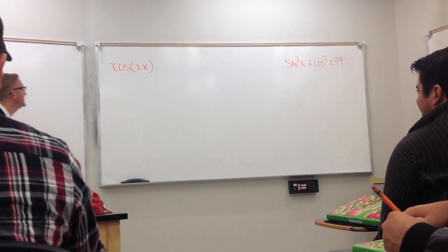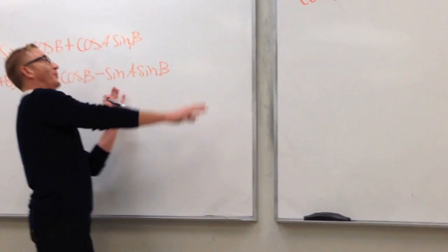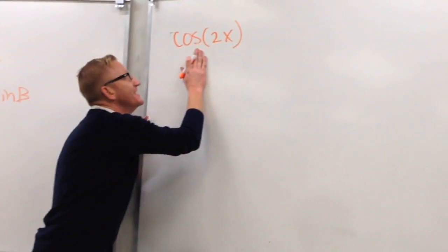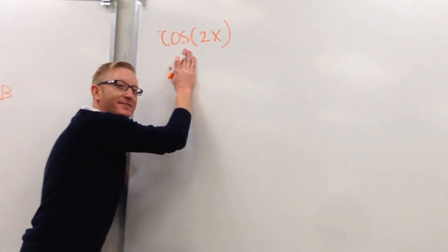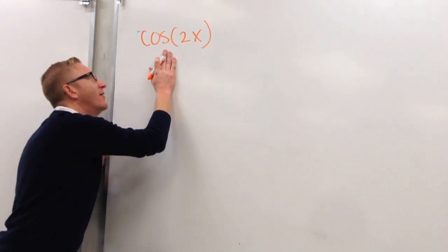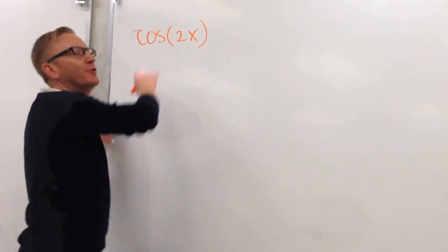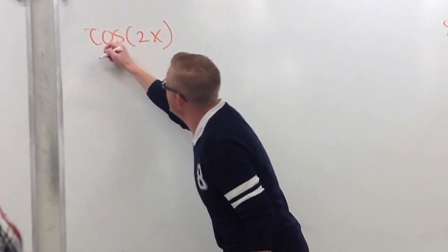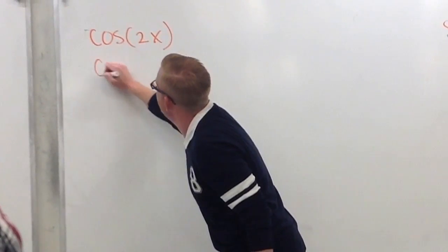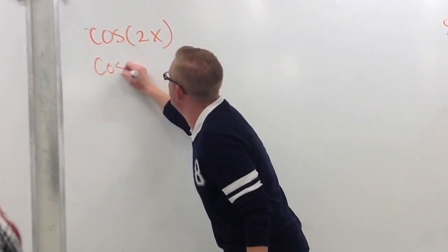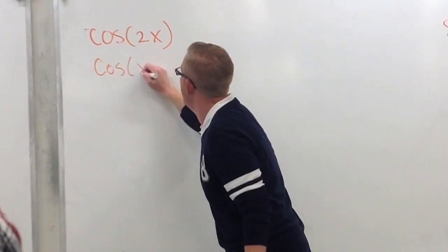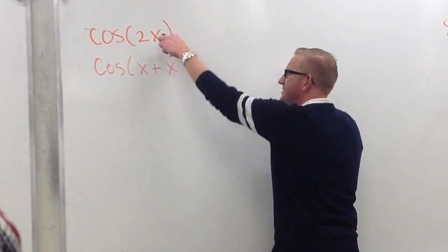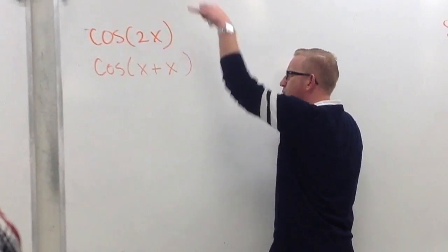I need to prove the cosine of 2x. So we saw a trick with the sine, and we can break this up so that we get the cosine of x plus x, because x and x is 2x.